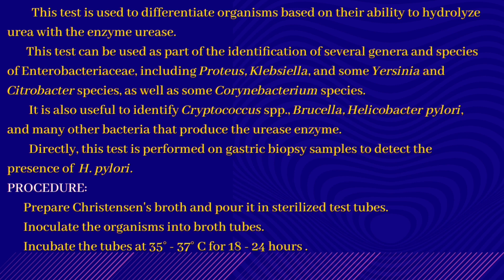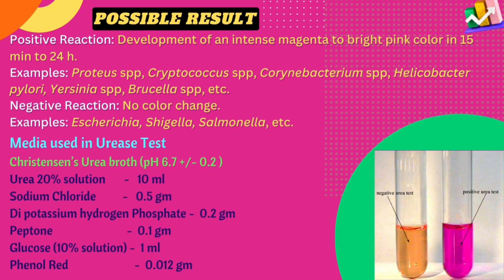For the test procedure, Christensen's urea broth is prepared and poured into sterilized test tubes. The test microorganism is then inoculated into the broth. After inoculation, the tubes are incubated at 35°C to 37°C for 18 to 24 hours.